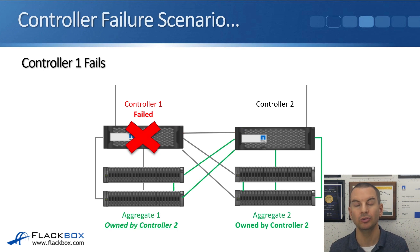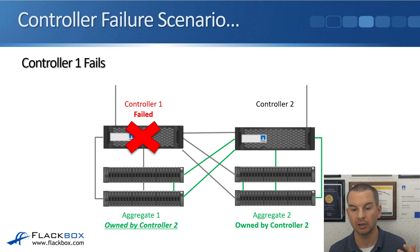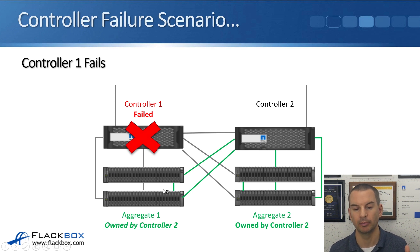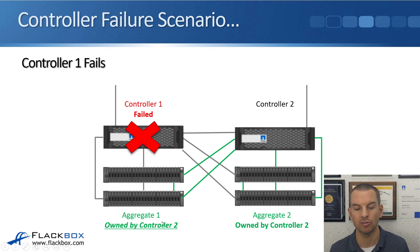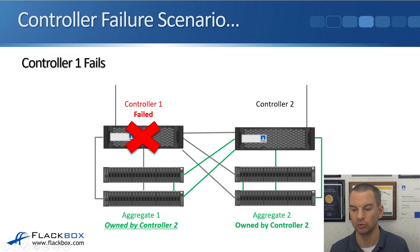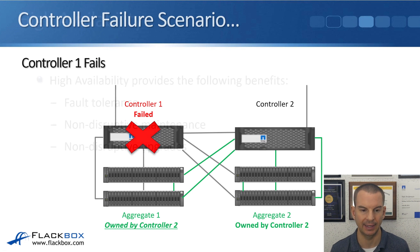When controller two takes ownership of controller one's disks, because it is connected to controller one's disk shelves as well, it can take direct ownership of those disks. During a failover, controller two still has ownership of its own disks in aggregate two, and it takes temporary ownership of the disks in aggregate one until controller one comes back online and is able to service its own aggregate again.